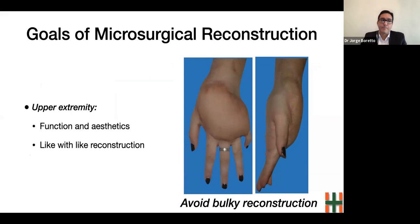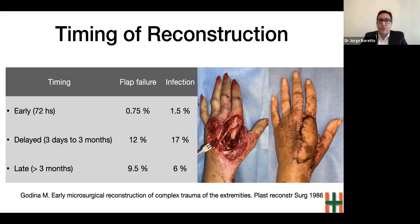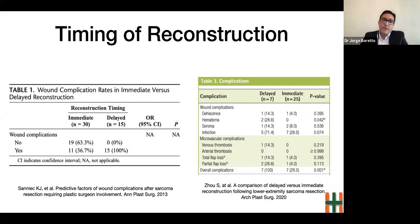Regarding the timing of microsurgical reconstruction, Godina originally advocated wound coverage within 72 hours of injury to prevent tissue fibrosis, infection, and edema that may complicate local or free flap coverage. Godina's seminal article did not differentiate between upper and lower extremity injuries; his recommendation was related to soft tissue defects in trauma patients. Nowadays, there is controversial information about the timing of microsurgical reconstruction, even in oncological patients.